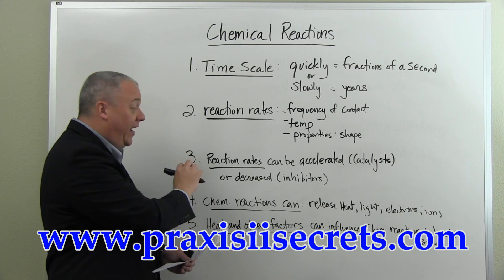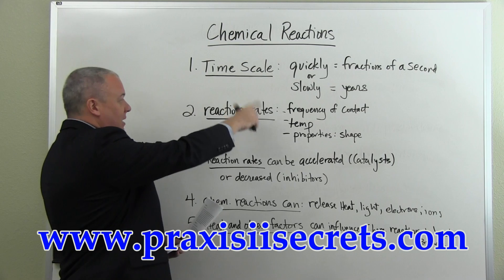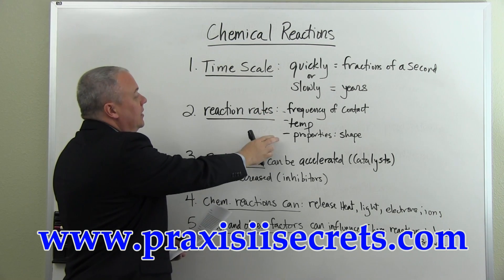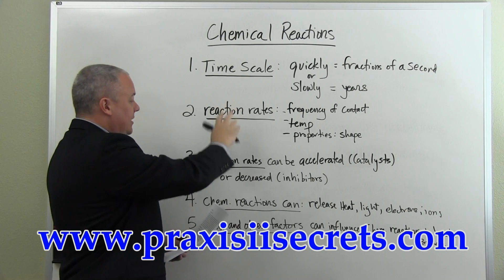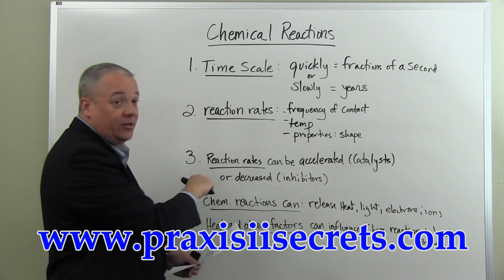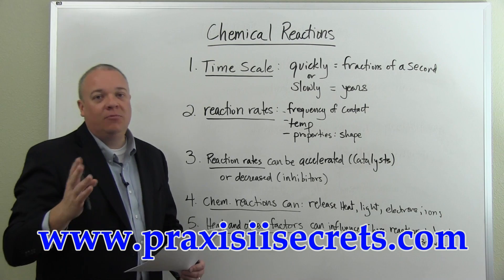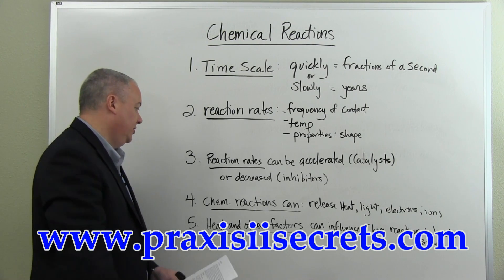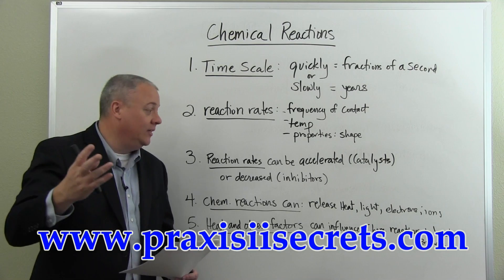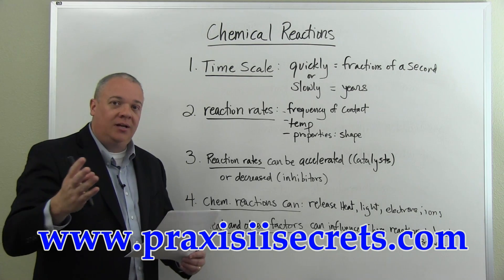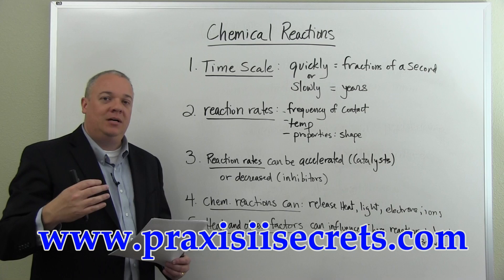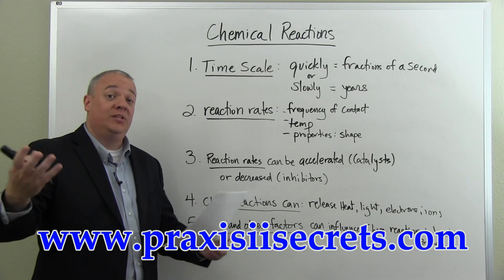So you can affect reaction rates naturally — through ways you're able to control temperature and what form the chemicals are in — but you can also introduce other chemicals: catalysts to accelerate, and inhibitors to decelerate the reaction times. Now when chemical reactions occur, they can release heat, light, electrons, and ions. There's usually some form of product from this interaction.